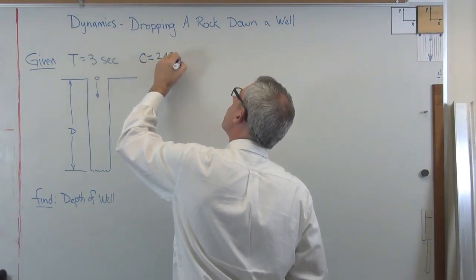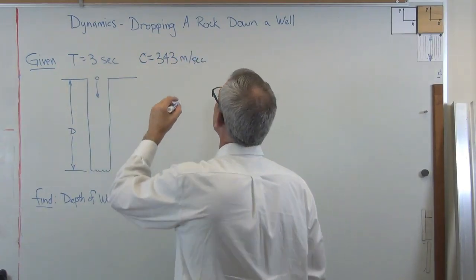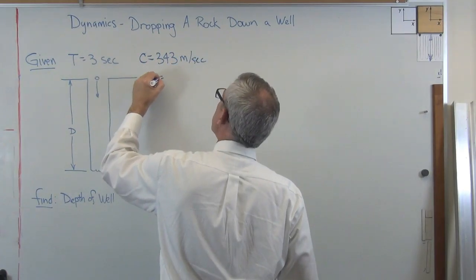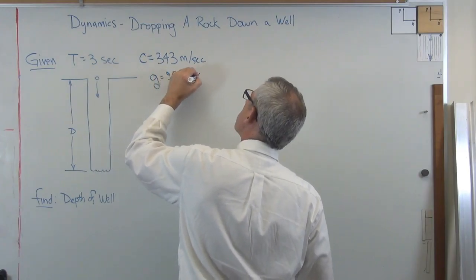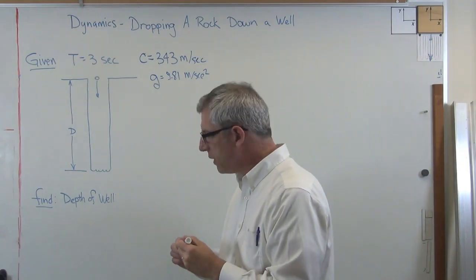We know the speed of sound in air is about 343 meters per second. If you don't know that, you can look that up. And we know that g is 9.81 meters per second squared. Okay, so we've got all that information. I've got this set up now.